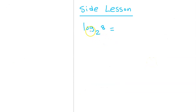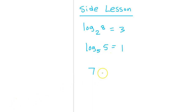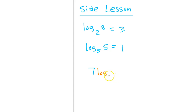Quick side lesson. What is log base 2 of 8? A logarithm is the exponent that turns the first number into the second number. 2 to the third power is 8, so log base 2 of 8 is 3. So what is the log base 5 of 5? That's 1, because 5 to the 1 power is 5. Because of this, say if I had a 7 just sitting there, I could write log base 3 of 3 next to it and I have not changed the value of the expression. This expression is equivalent to simply 7, because the log base 3 of 3 is 1. And 7 times 1 is still 7. Of course, this could be the log base 6 of 6 — these could be anything, as long as they match.